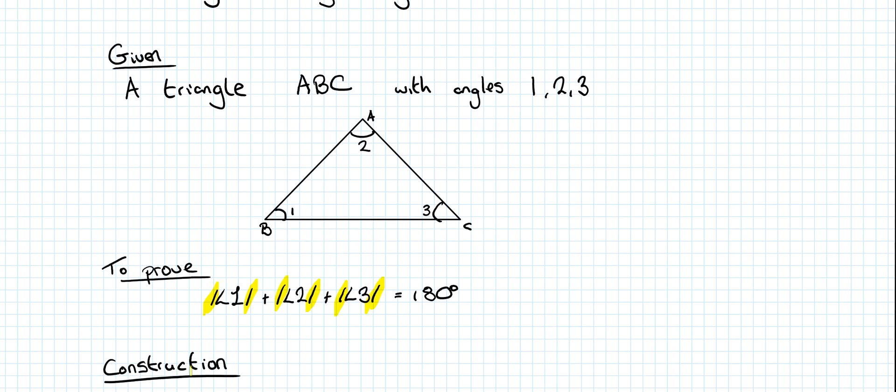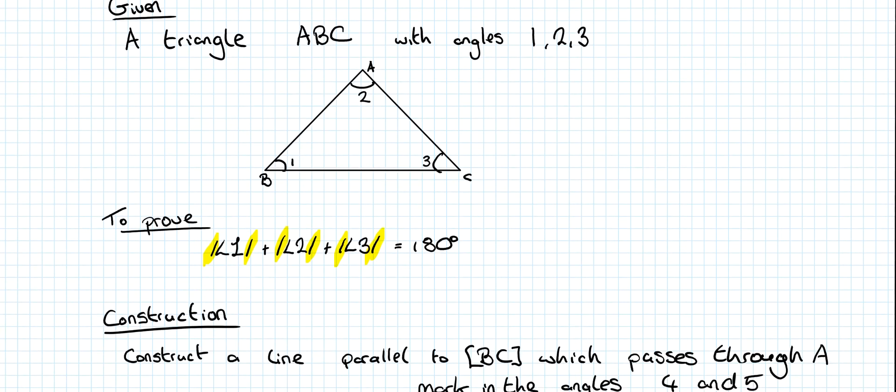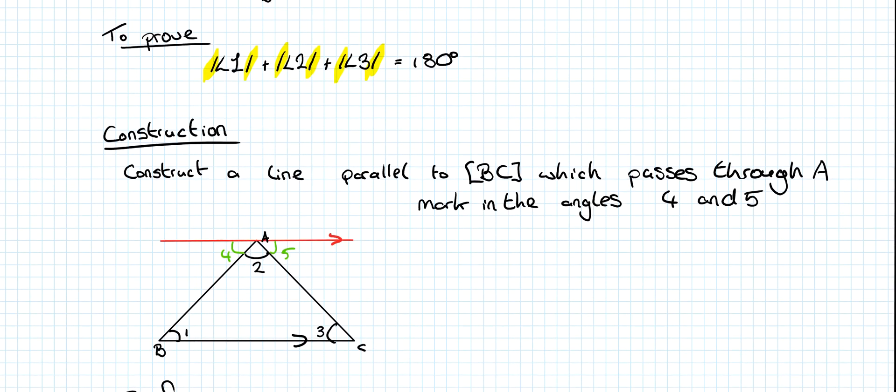There will be a section for construction, what you would draw on your diagram. You want to draw in a parallel line. Construct a line parallel to BC, and we're marking in that it's parallel by including the arrow. Parallel to BC that passes through A. And we want to mark in our angles 4 and 5 also. You could call them anything you want, but if we're going 1, 2, and 3, then 4 and 5 make sense to include.